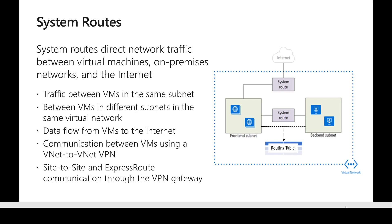There are two types of routes. The first is system routes, which come by default — we don't need to do anything to specifically create them. Whenever we create a route table, it already has some system routes by default, and these system routes enable connectivity between different virtual machines, to on-premises, or to the internet.